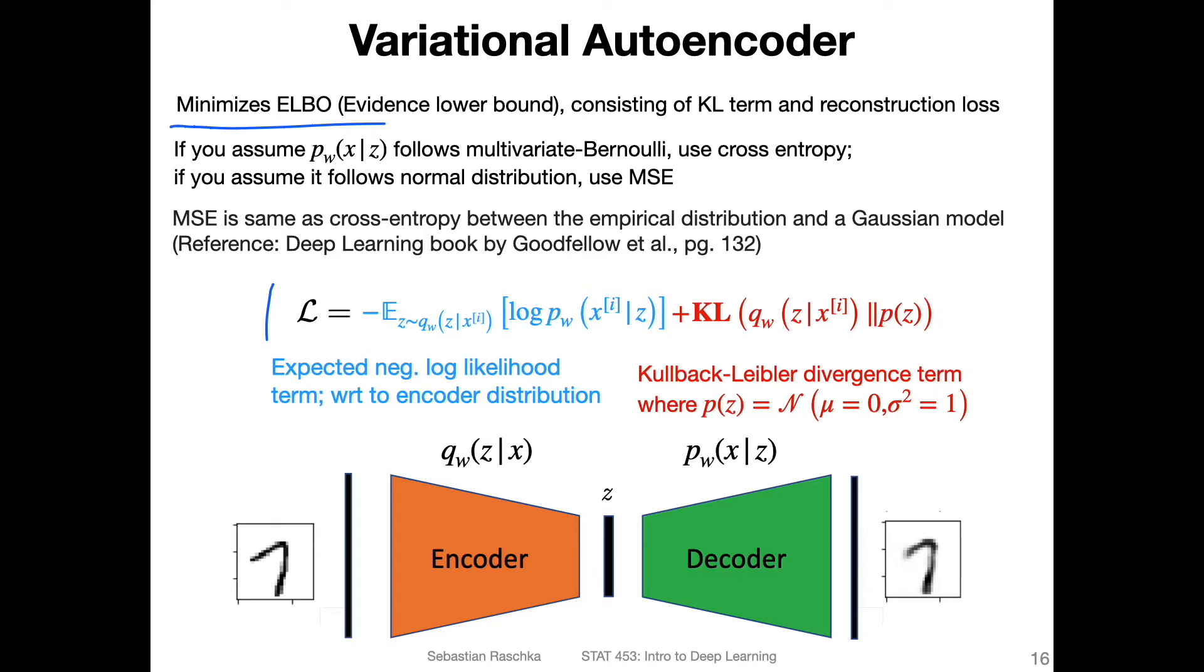But overall, we are optimizing or minimizing a loss that consists of minimizing the expected negative likelihood of the data and then the Kullback-Leibler divergence term, which is the difference essentially between this latent space distribution and standard multivariate Gaussian distribution.